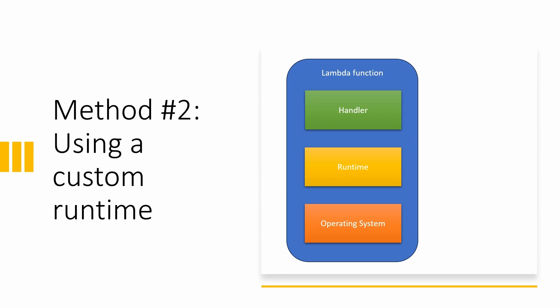Method number two: using a custom runtime. A developer provides a runtime and a handler. This method allows running any code as a function as long as it can run on Amazon Linux. In addition to handling events and returning responses, you will be responsible for receiving requests from the AWS Lambda service and sending back responses using the Lambda Runtime API. This may feel intimidating at first, but AWS has decent documentation and you may be able to reuse a runtime implementation if one is already available for your programming language and environment. For example, AWS provides tools and examples for building Lambda functions using custom runtimes for .NET and C++.